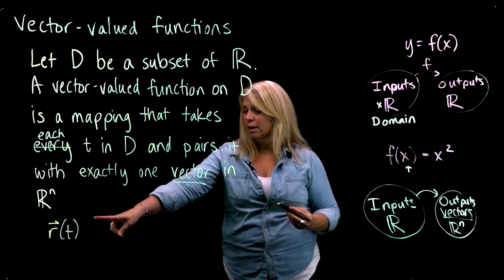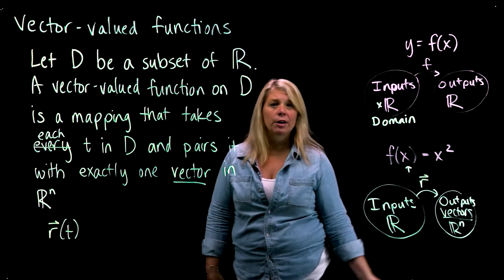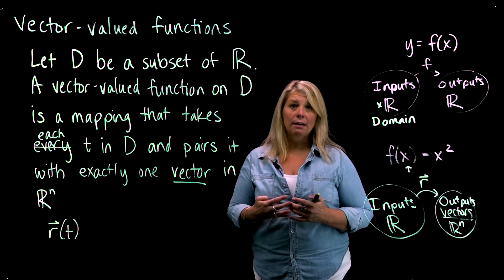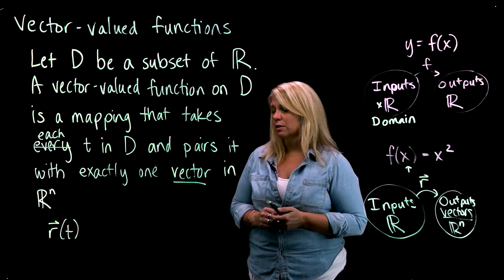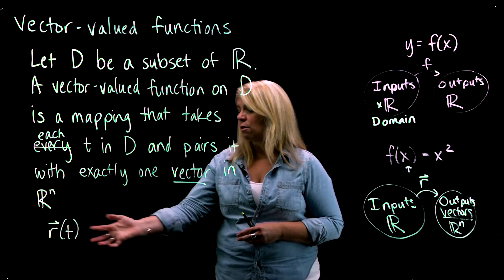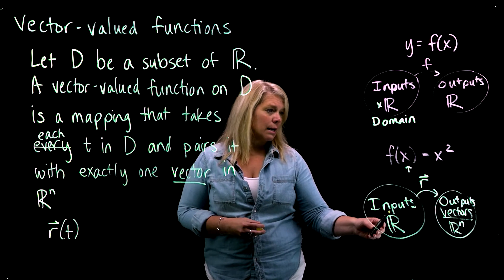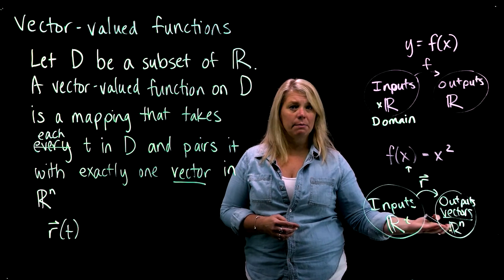So vector-valued functions, the function name is often called R. It might be called V for vector, although often that's usually reserved for a velocity vector function. We will sometimes use other letters if there's a reason to do that, but this is what our text and a lot of texts use for just an ordinary vector-valued function, R of t.